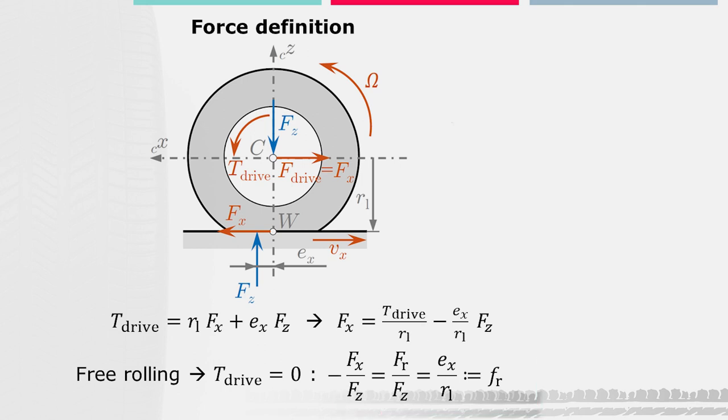which now acts in the opposite direction and counteracts the longitudinal motion of the wheel. A division of this drag or loss force by the vertical force F-set corresponds to the force definition of the rolling resistance and is described by the rolling resistance coefficient F-R. In this case, the rolling resistance coefficient is determined by the shift of the vertical force EX divided by the loadiest tire radius RL.